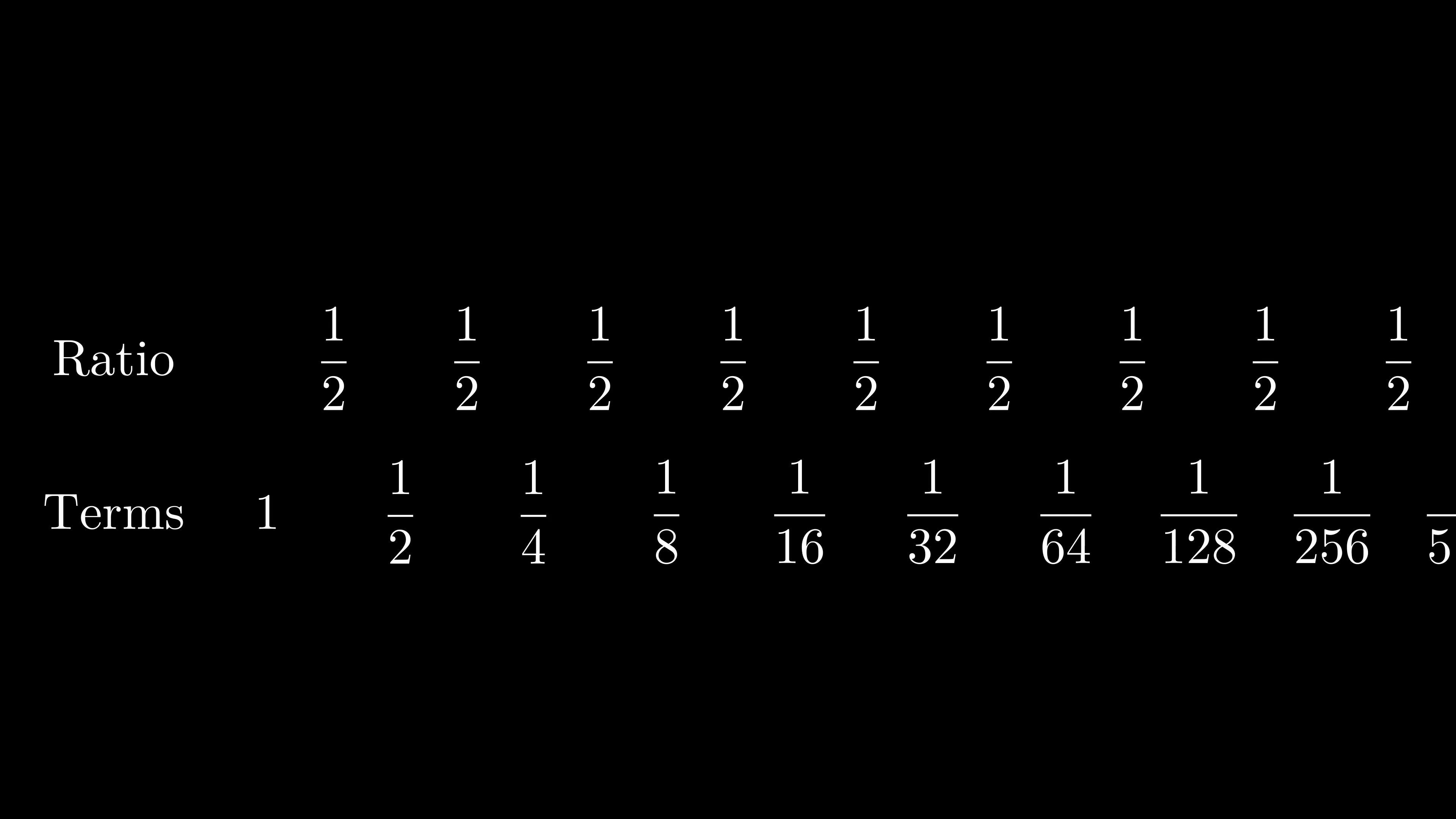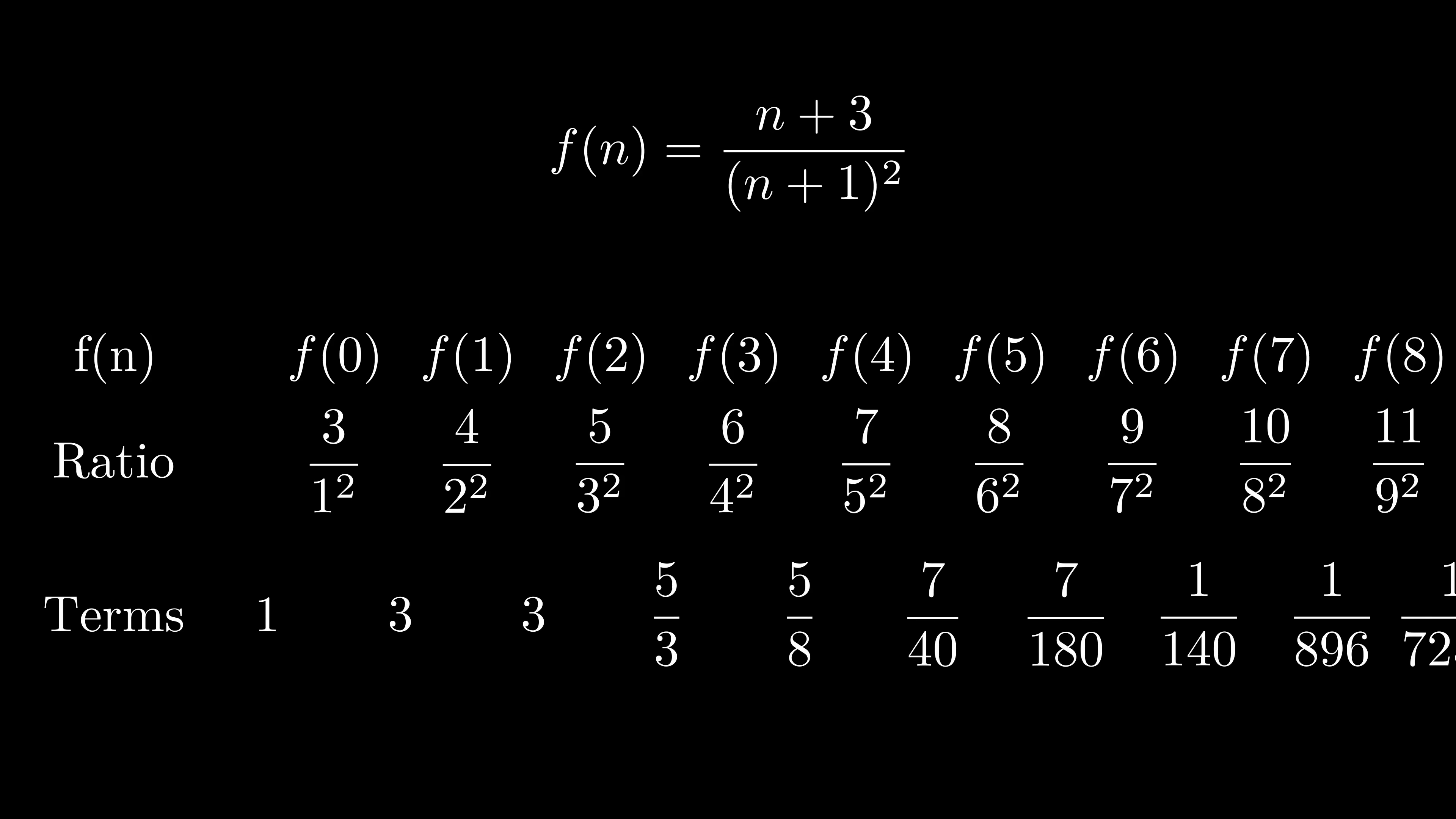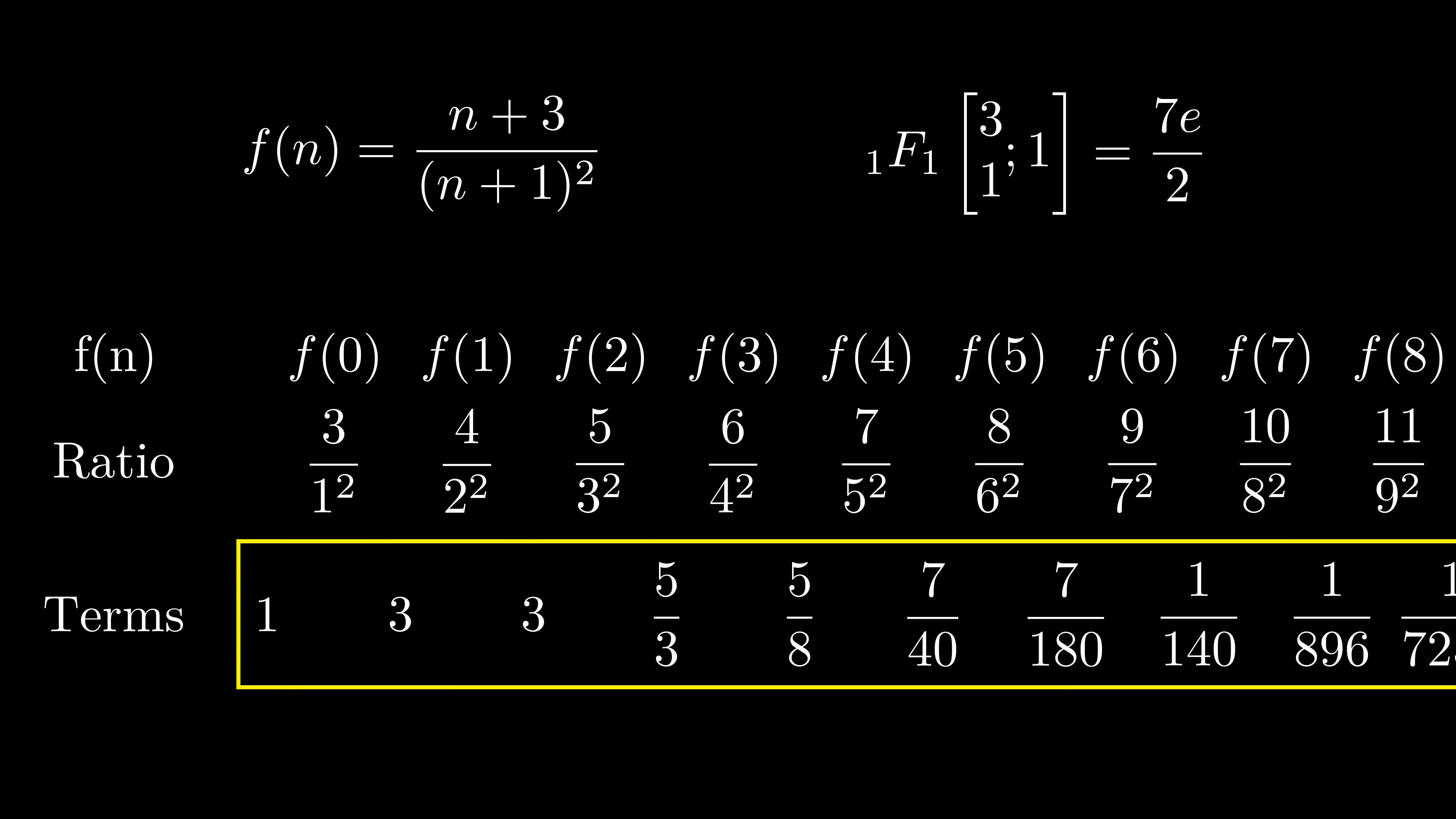First, let's talk about what geometric series are. In a geometric series, there is a constant factor between each term of the sequence, and we sum the sequence. In a hypergeometric sequence, the factors between terms are not constant, but outputs of a rational function, and once again, we sum the terms from 0 to infinity.